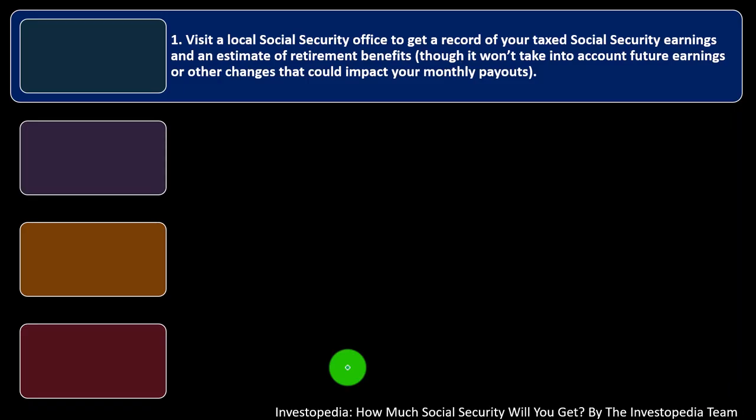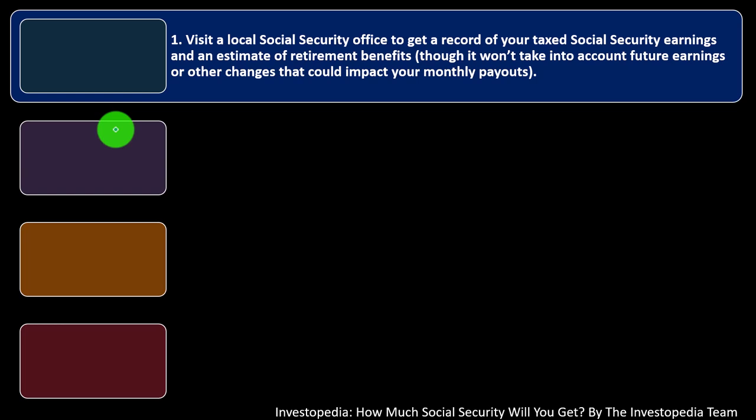There are four ways to do this. Number one: visit a local social security office to get a record of your taxed social security earnings and an estimate of retirement benefits, though it won't take into account future earnings or other changes that could impact your monthly payouts. You can get the information on how much of your wages were subject to the tax — they take a flat rate, about 6.2%. If you're self-employed, it doubles, and it gets a bit more complicated.